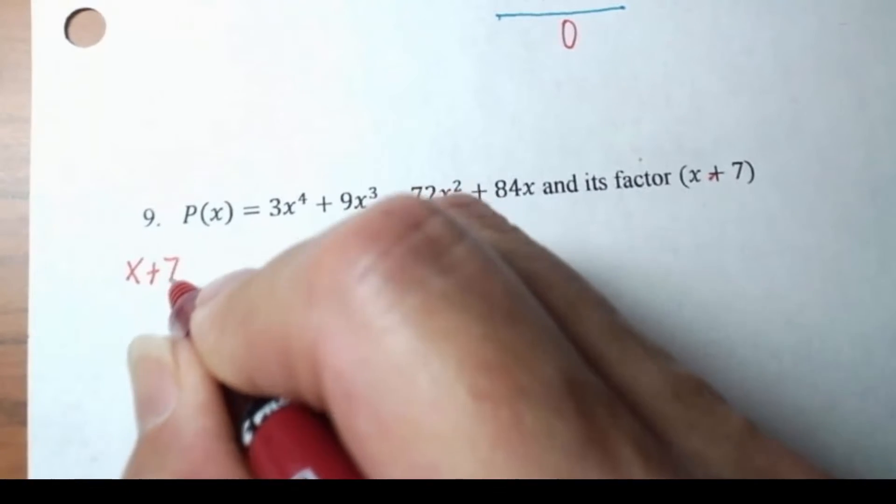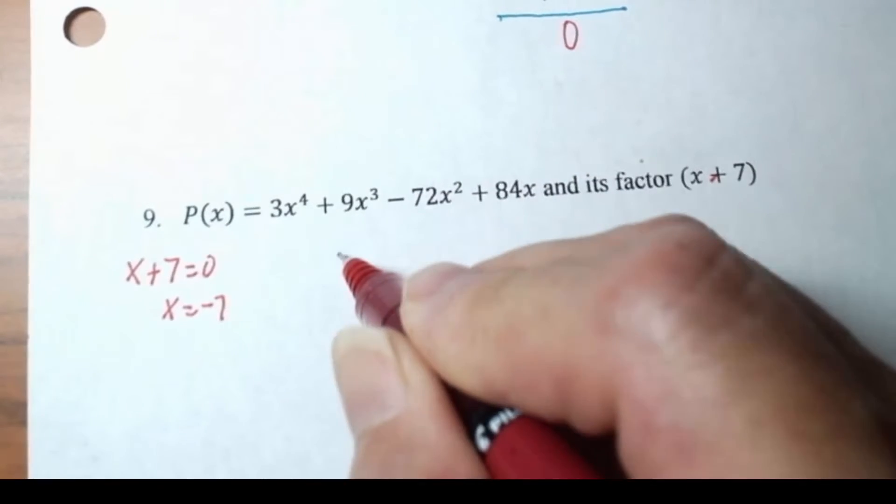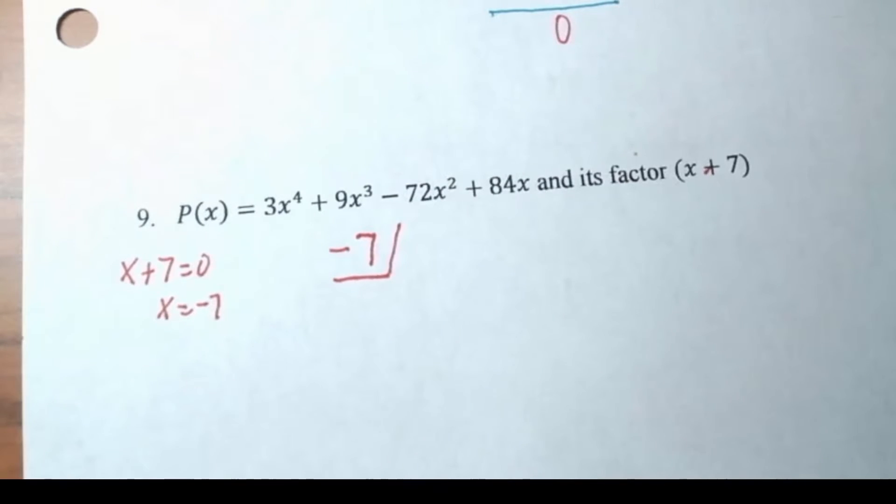Remember x plus seven equals zero, solve for x, so the negative seven is what's going to go in your little box here in your synthetic division.